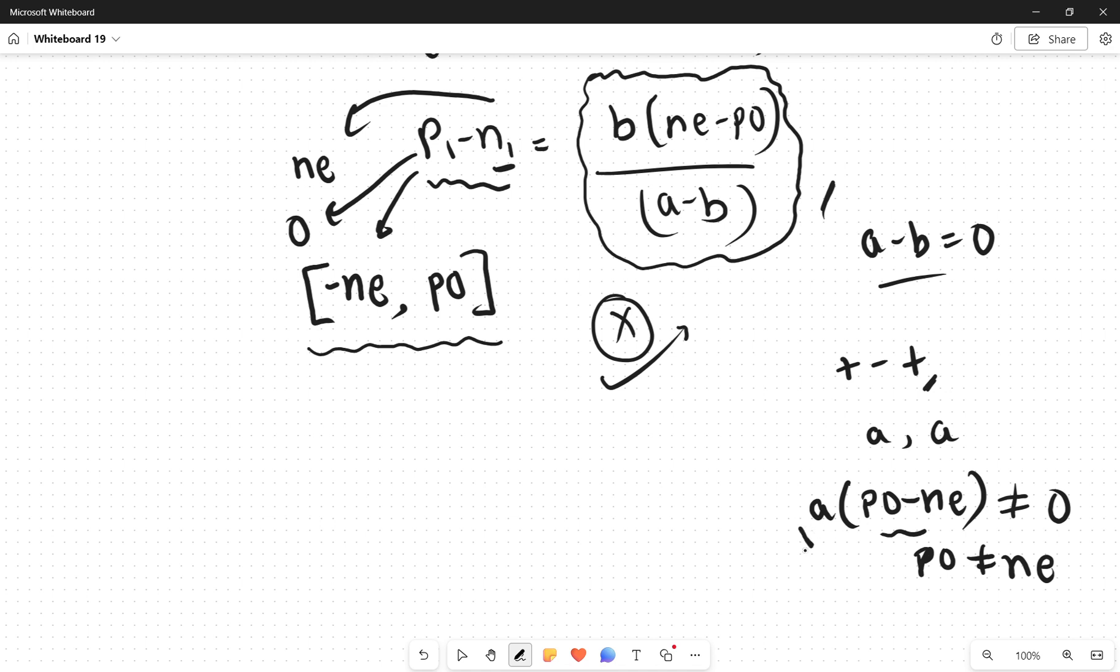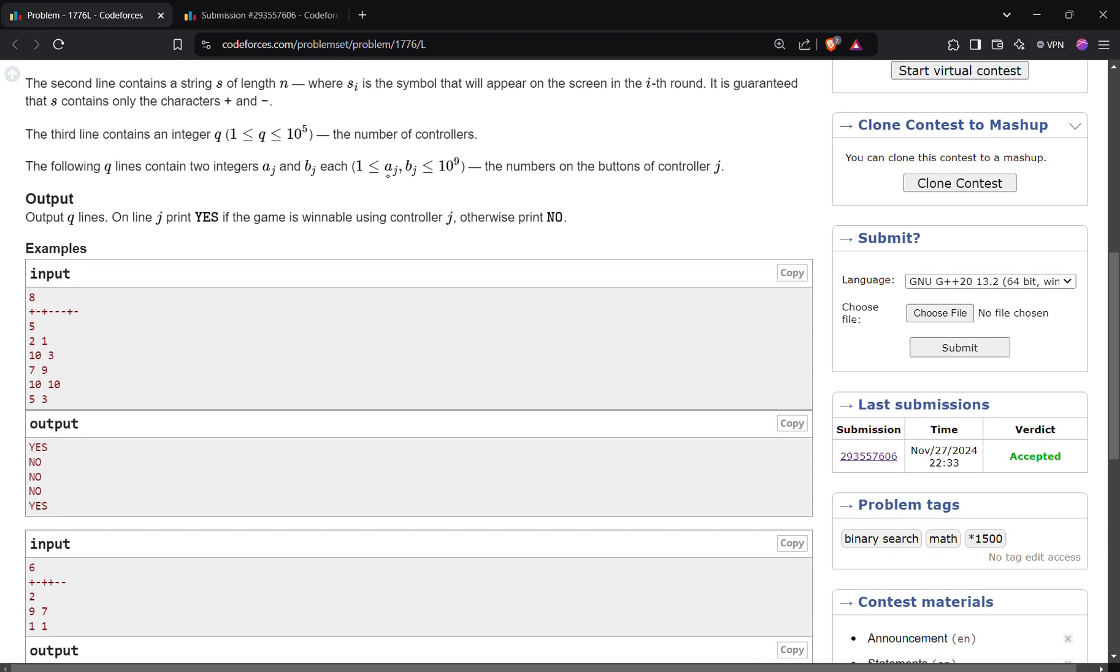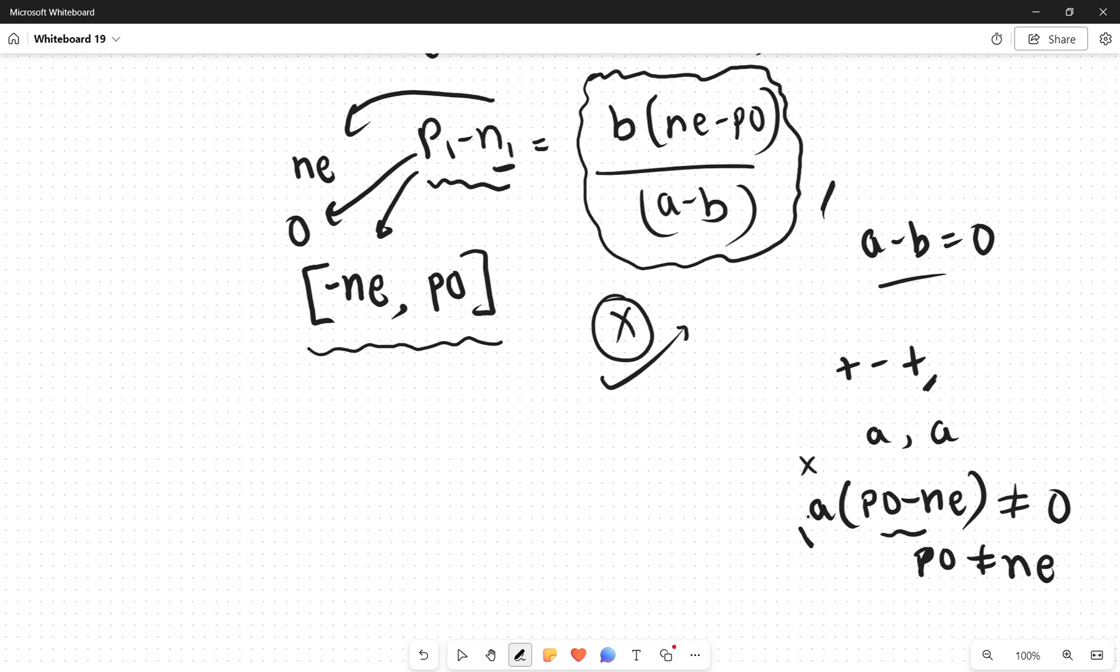Another case is that a can be zero, right? But in the question we have given that all values are greater than or equal to one, so that won't be the case. So if a is equal to b then PO must be equal to NE if the answer has to exist. One more thing we can notice is that p1 and n1 are integer values, so this thing b*(NE minus PO) divided by (a minus b) should be an integer, because if p1 and n1 both belong to integers their subtraction will also belong to integers.